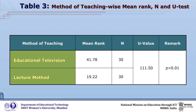From Table 3, it is evident that the U value is 111.50, which is significant at the 0.01 level. This shows that the mean ranks of achievement in science of students taught through educational television differ significantly from those taught through the lecture method. Thus, there was a significant association between methods of teaching and achievement in science of students.